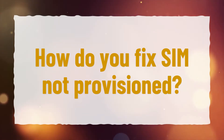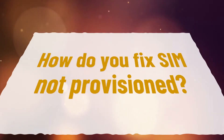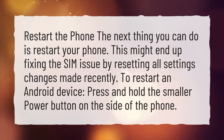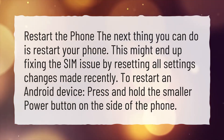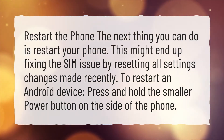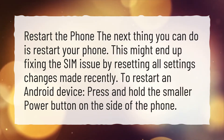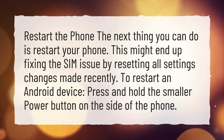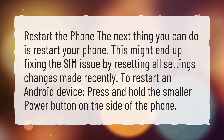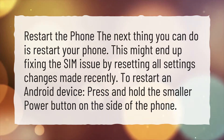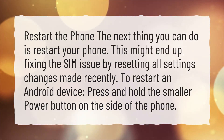How do you fix SIM not provisioned? Restart the phone. The next thing you can do is restart your phone. This might end up fixing the SIM issue by resetting all settings changes made recently. To restart an Android device, press and hold the power button on the side of the phone.